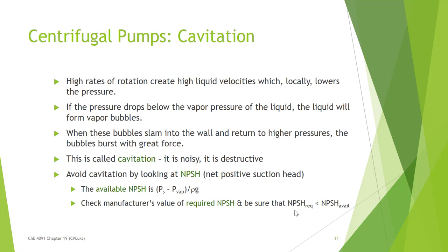You'll know you have cavitation in your system by the noise, but you can avoid it by planning ahead. To do that, we look at the net positive suction head (NPSH) — this is the pressure on the intake side of the pump. We simply want to make sure we have enough pressure on that side so that we will always be above the vapor pressure. That's something you want to always verify in your system.